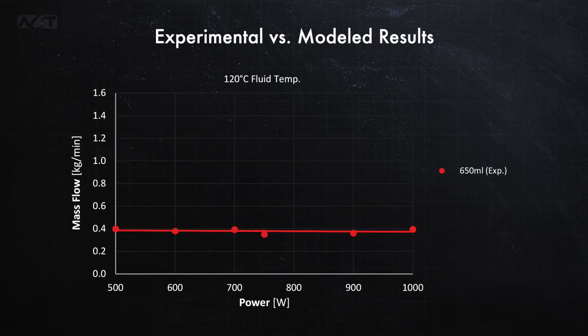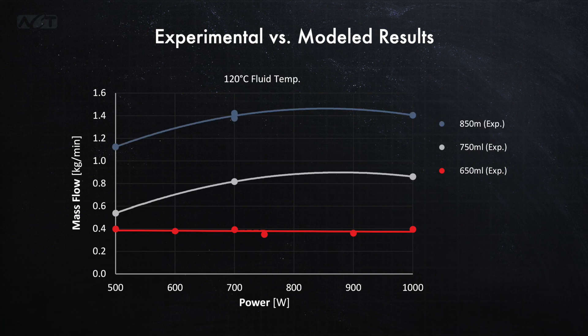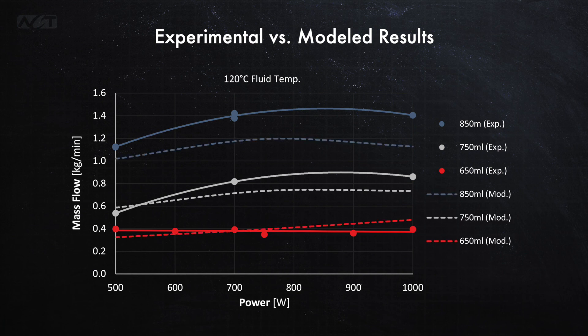Here we see the experimental mass flow rate versus power for the three fluid charges. A higher charge corresponds to an increase in the liquid head, which as we expect, led to an increase in the mass flow rate. This data was compared against similar model results with the model being shown to predict the mass flow rate to within about 20 percent of the experimental value.